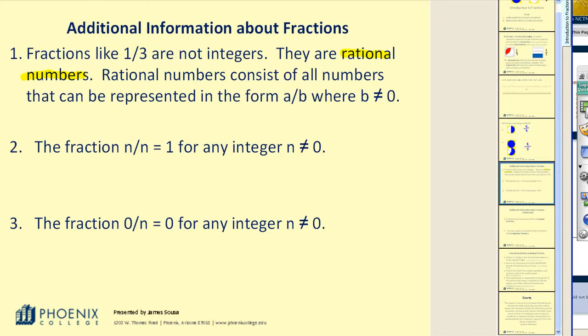Number two, the fraction n over n is equal to one for any integer n not equal to zero. Again, we illustrated that earlier. But what that is saying is if my numerator and denominator are equal, it's going to be equal to one. That should make sense. If I have a circle that's divided into three equal parts and I consider three of them, I would have a complete circle or one.